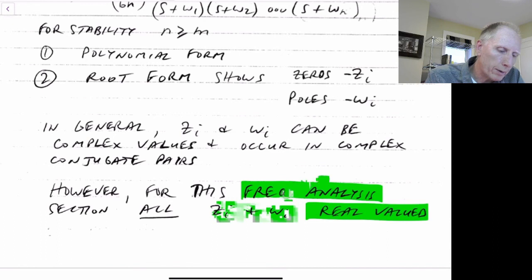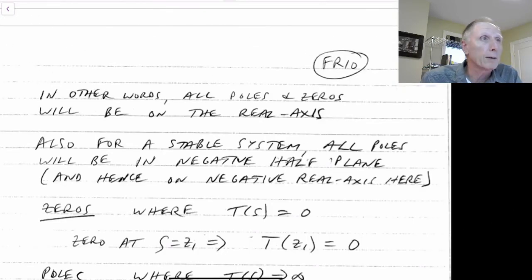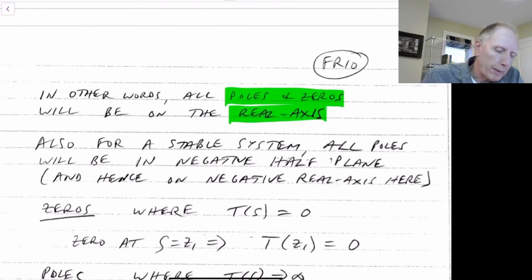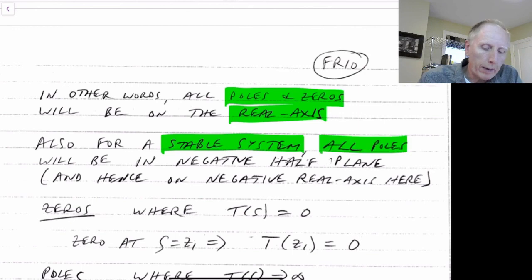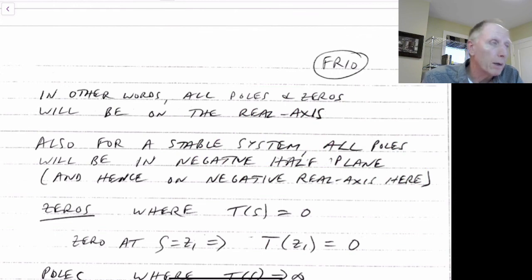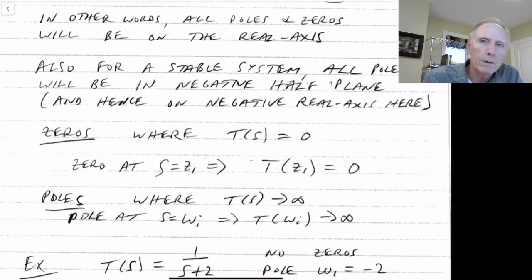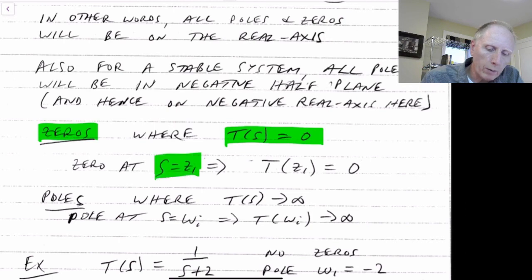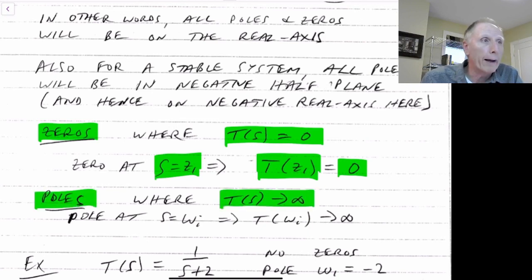We also know that for a stable system, all of our poles have to be in the negative half plane — in this case on the negative real axis — to guarantee stability. Zeros are where T of s equals zero: a zero at s equals z1 means T of z1 will equal zero. Poles are where T of s goes to infinity: a pole at s equals omega sub i means T of omega i will go to infinity.